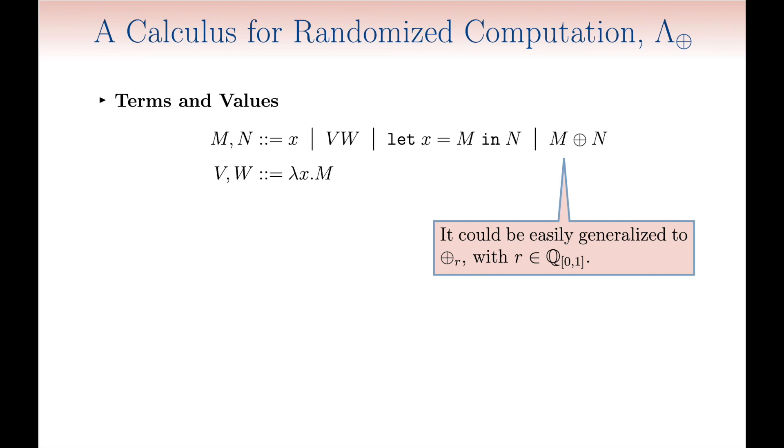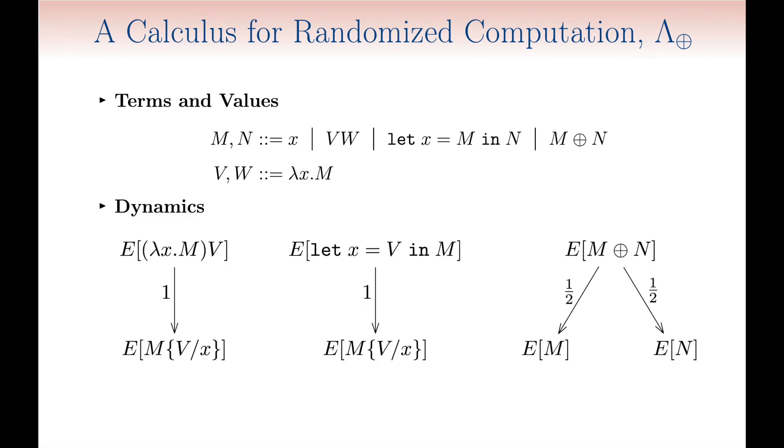But all what we are going to say also hold when a more general form of choice is available, namely one in which the right-hand side and the left-hand side can be chosen with probability r and 1-r, where r is any rational number between 0 and 1. The dynamic semantics of the calculus is specified as a probabilistic transition system in a very natural way, once a natural notion of evaluation context is given.